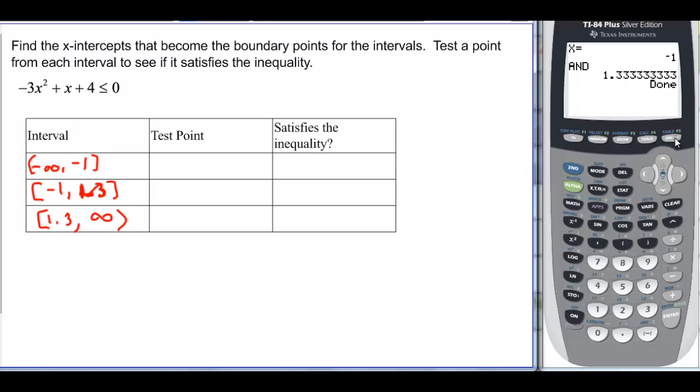And then I have from 1.3 over to infinity. Again, let's look at the graph to see that. Negative infinity up to that x-intercept, which was -1. And then we went to this x-intercept, the graph went above it. So it was between -1 and 1.3, my other x-intercept. And then from that over to infinity.